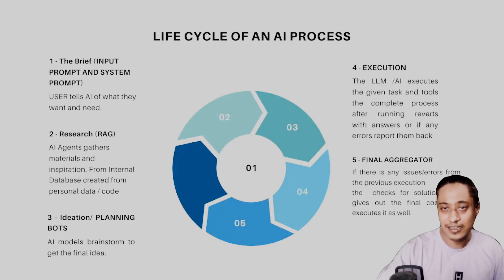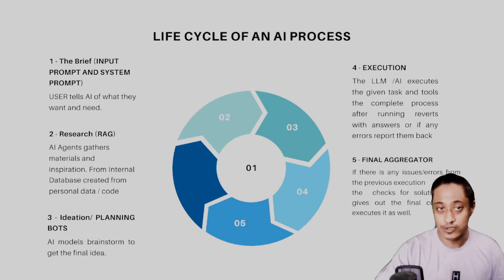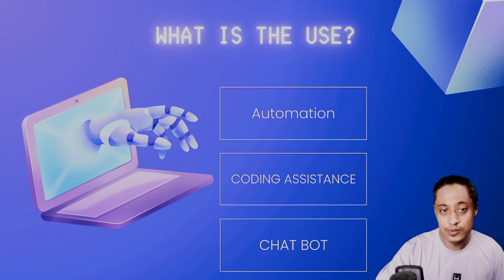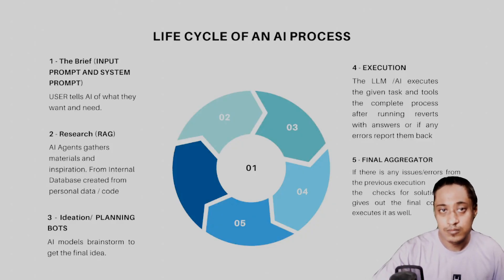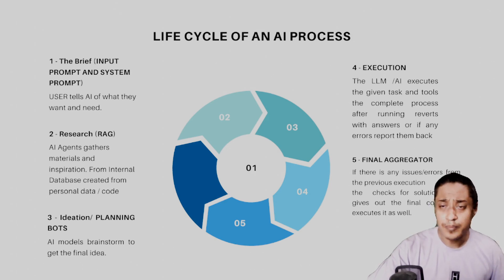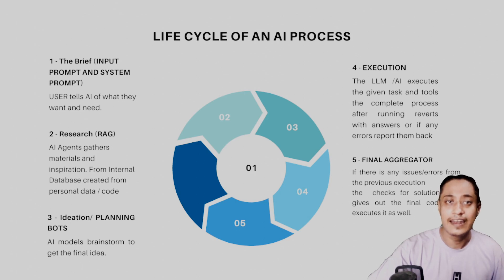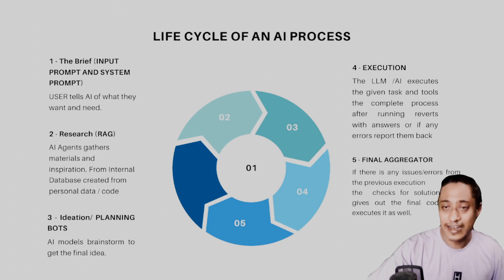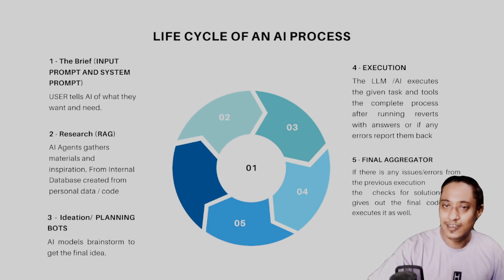The lifecycle of BuddyCode starts with giving it two briefs: an input prompt and a system prompt — the user tells the AI what they want. I've also added RAG support, which is the way agents gather materials and inspirations from an internal database to create personalized data or code.